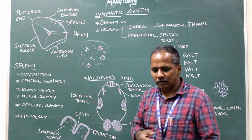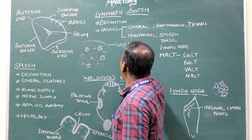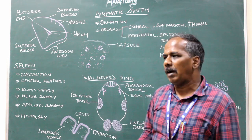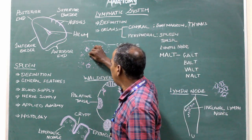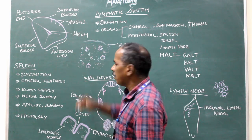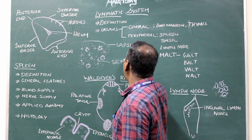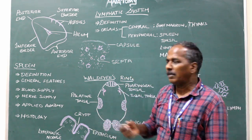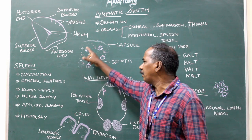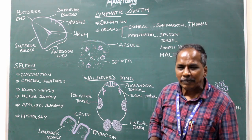Histology of the spleen. The spleen has an outer capsule. From the capsule, numerous septa called trabeculae extend into the parenchymal tissue. The parenchyma contains red pulp and white pulp.